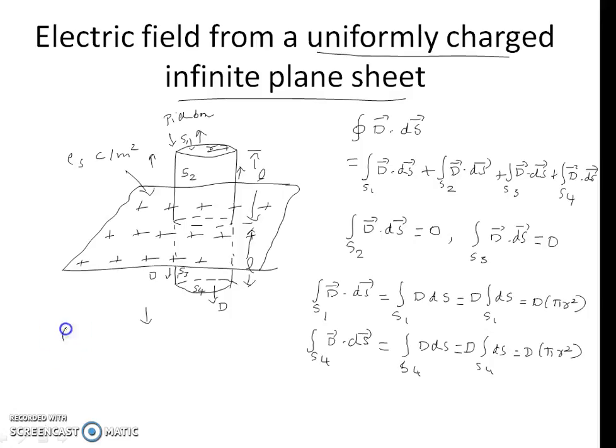The flux emerging from the closed surface, that is sum of all the terms, is given by 2D into π R squared.